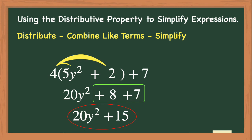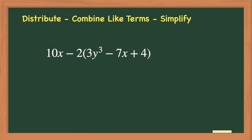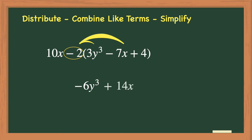Let's try a more challenging expression next. This expression is a little more challenging because the distributive property is in the middle of the expression instead of at the beginning, although we will still follow the same steps to simplify. The first step is to use the distributive property by distributing the factor of negative 2 to all three terms in the parentheses only. When we distribute negative 2 to 3y cubed, we get negative 6y cubed, because negative 2 times positive 3 is negative 6, and we bring down the y cubed. Next we distribute negative 2 to negative 7x to get positive 14x, because negative 2 times negative 7 is positive 14, and we bring down the x. Then we distribute the negative 2 to the last term, positive 4, to get negative 8.